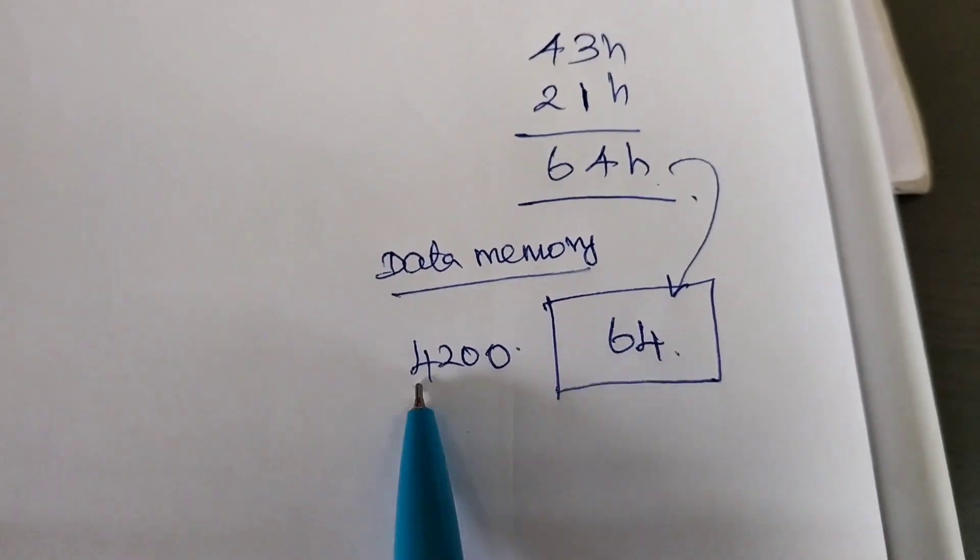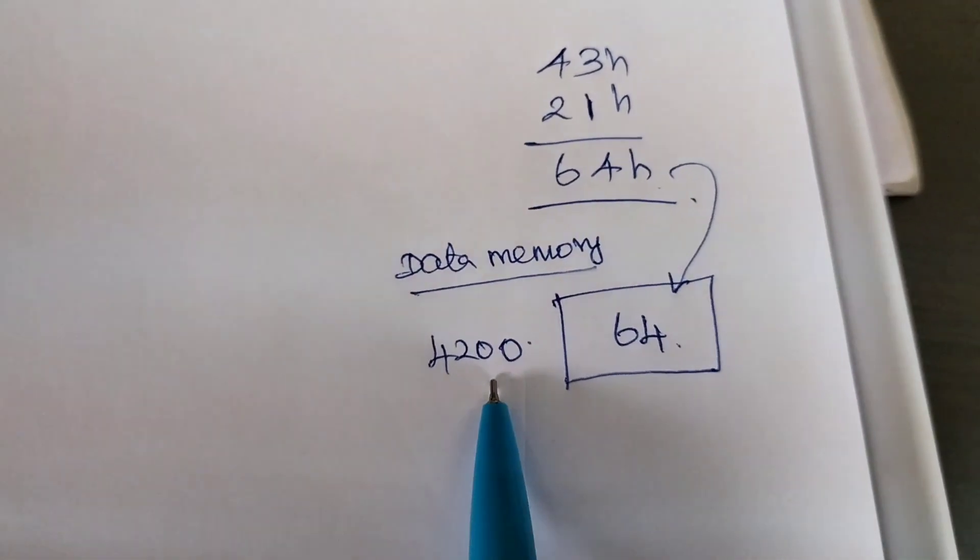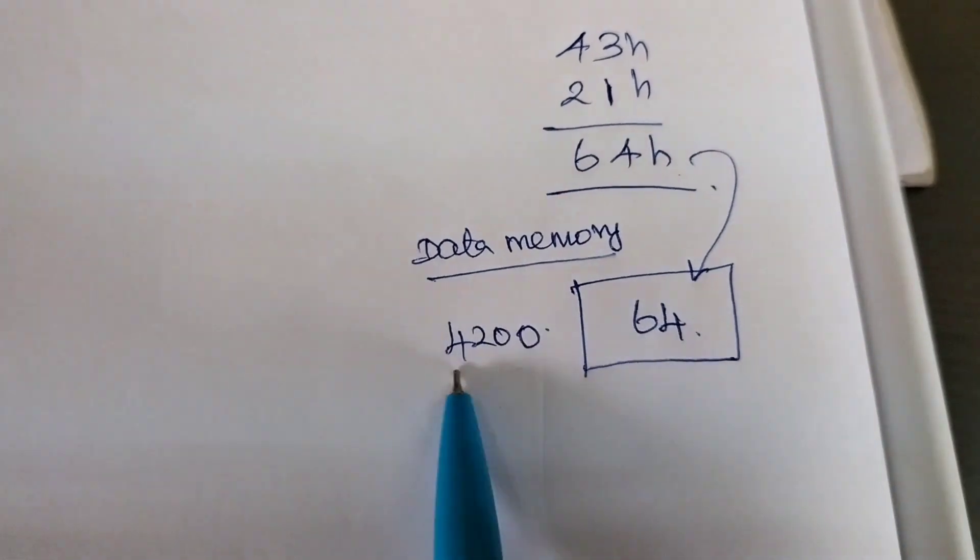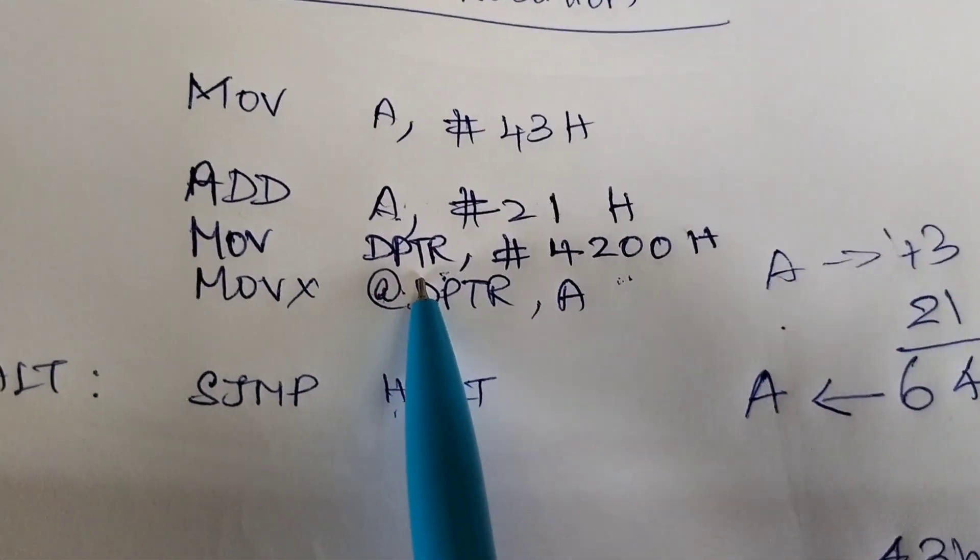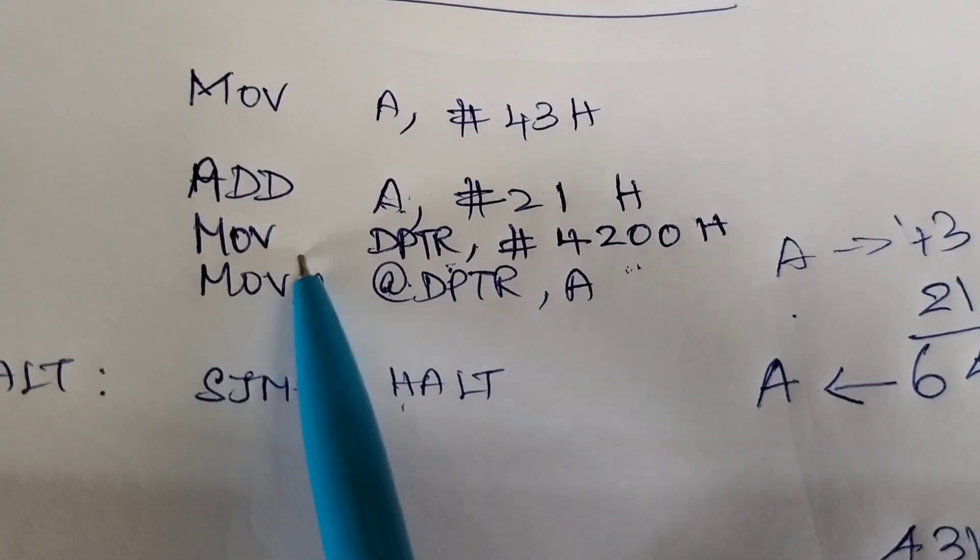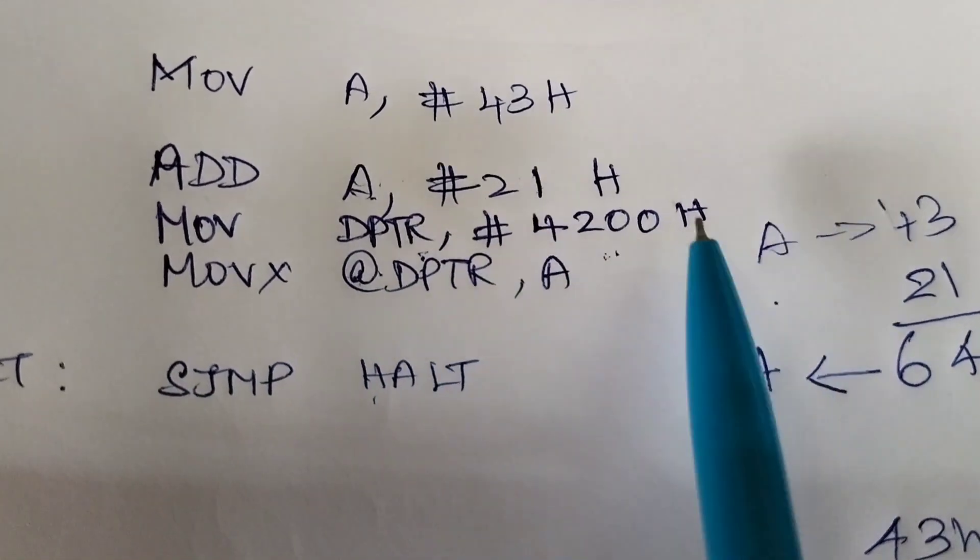So for example, if this is the memory address 4200, first we need to load this 4200 in DPTR. So that instruction is nothing but here it is given. So MOV DPTR, #4200H.